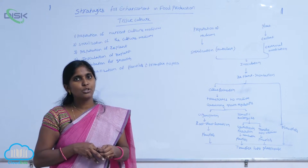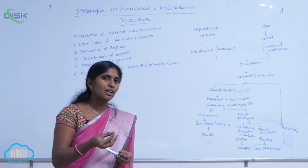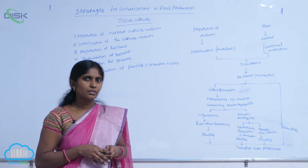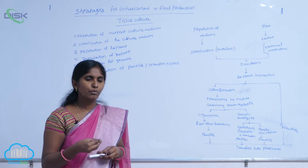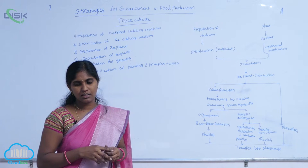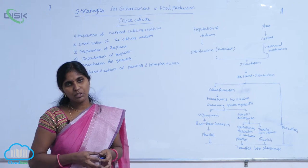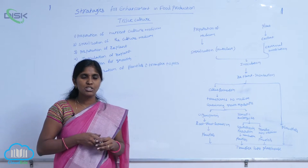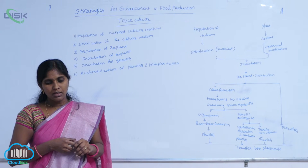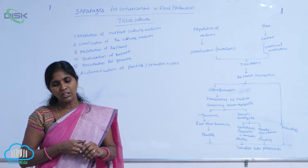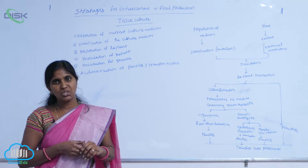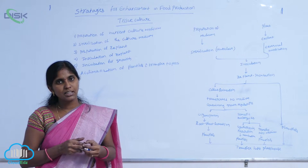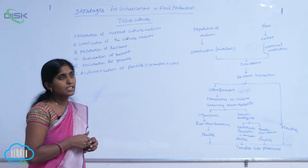Otherwise, it is rich in microorganisms. When it is entered or inoculated into the culture medium, the microorganisms go for their culturing. Sodium hypochlorite water is used for sterilization of explant. Also, 0.1% of mercury chloride is used for sterilization of explant. The sterilized explant is then ready to inoculate into culture medium.